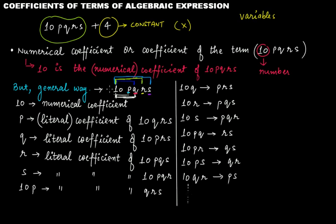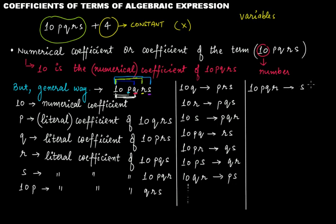In the same fashion you can go on by making different combinations. You can make a combination of one number and three variables. For example, 10PQR is the literal coefficient of S. The main thing is: when you talk about the coefficient of a term, you tell the numerical coefficient. But within the term, there can be several literal coefficients formed by different combinations of variables and numbers.